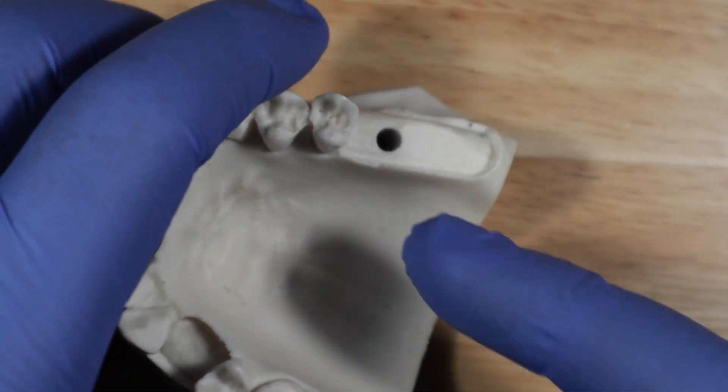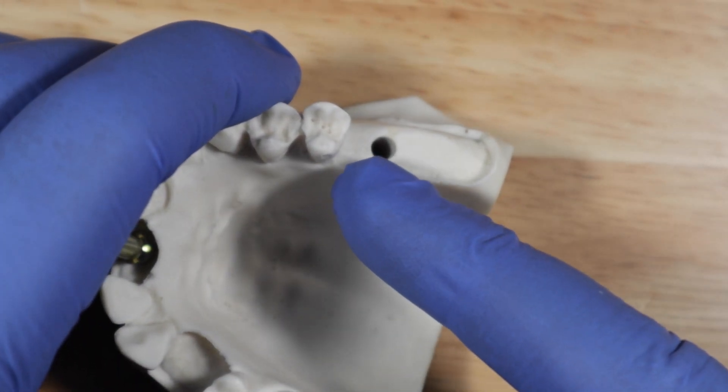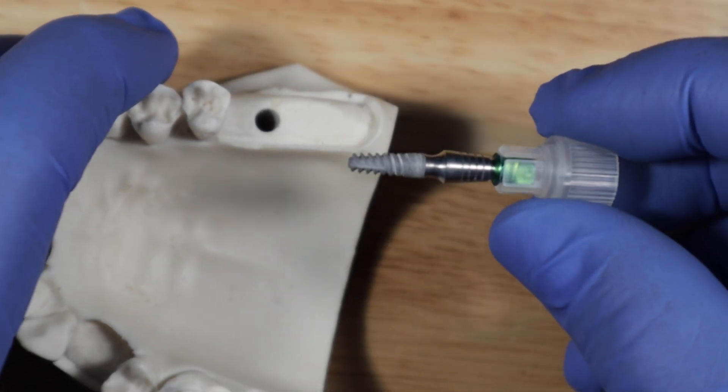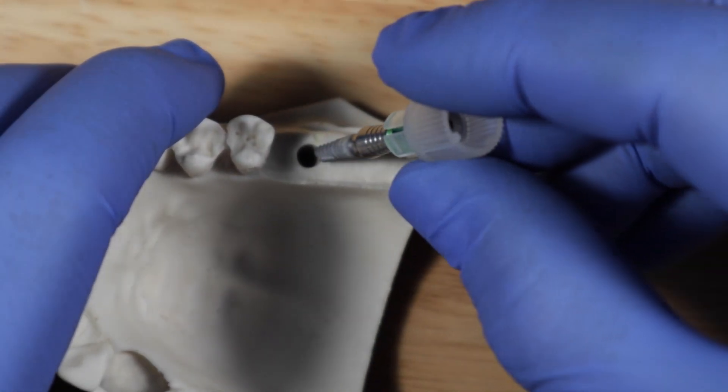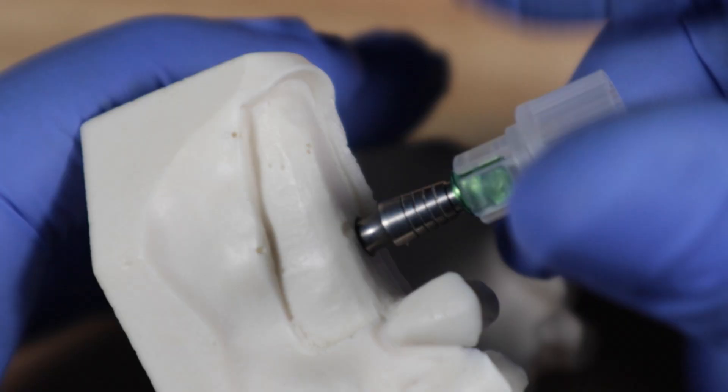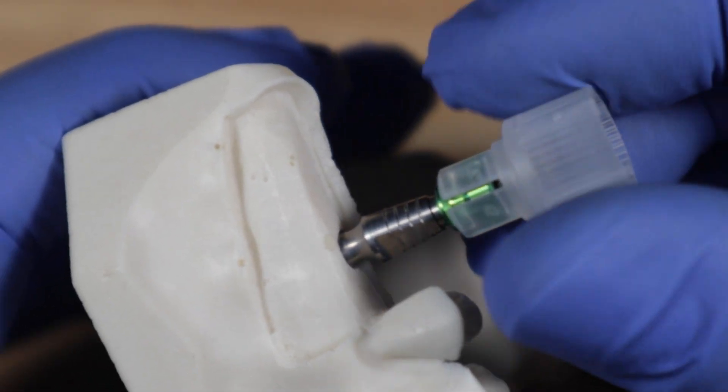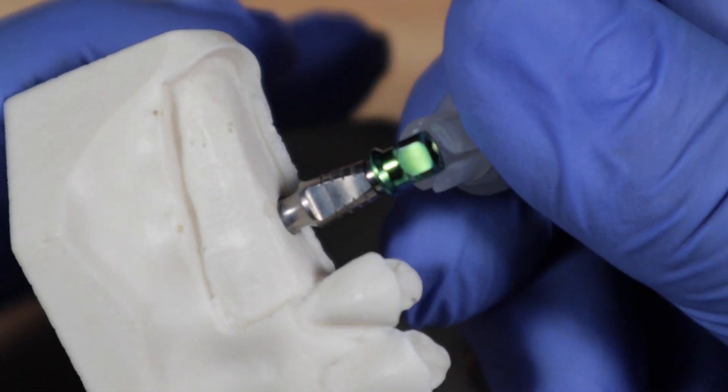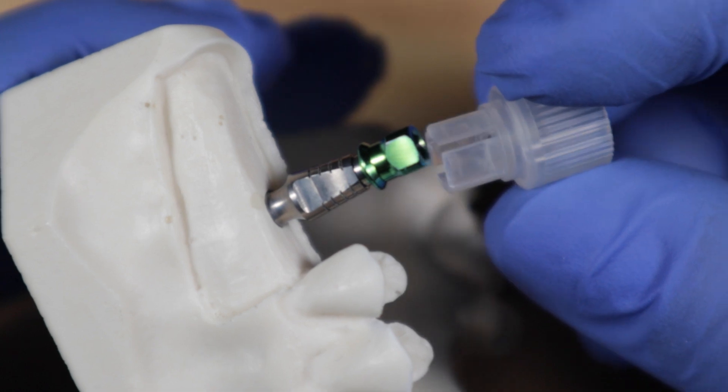And once the site is done, once you've actually prepared the site in the patient's mouth, all you do is grab it from this thumb grip. And you insert that and you start turning this. And this little plastic part comes off, so you can just take it right off. Once the implant gets primary stability, this comes off.